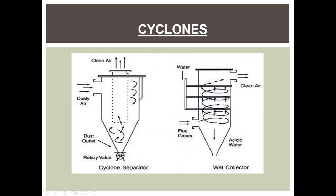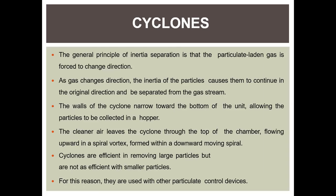In the cyclone separator, clean air passes out through one section, and at the bottom there is a rotary valve at the dust outlet. There is an entrance for dusty air. In the wet collector, there is entry of flue gases, clean air outlet, and acidic water which is removed at the bottom of the collector. The cyclone separator is generally used for separation of large particles, not smaller particles.